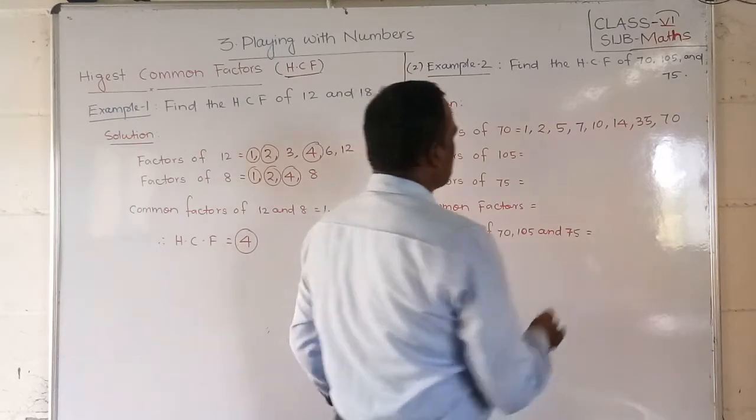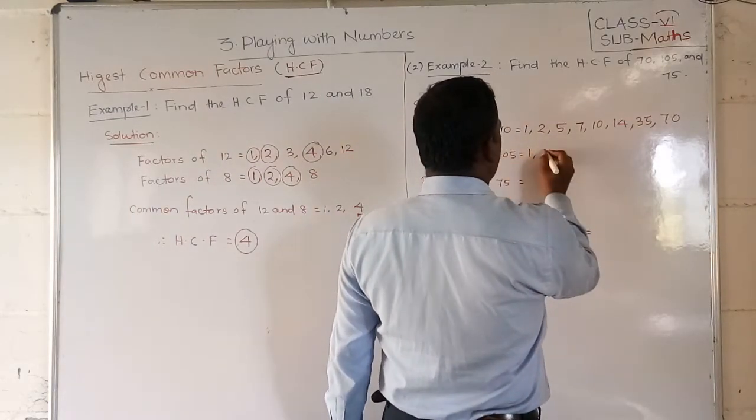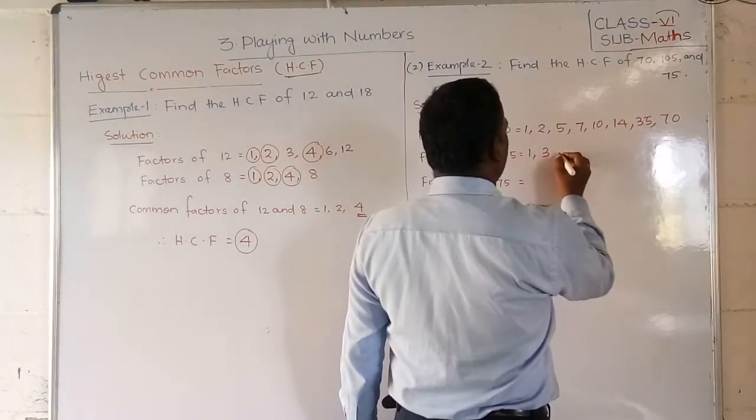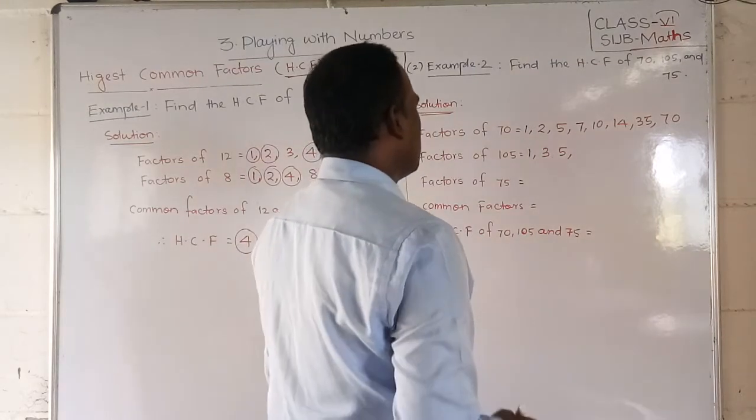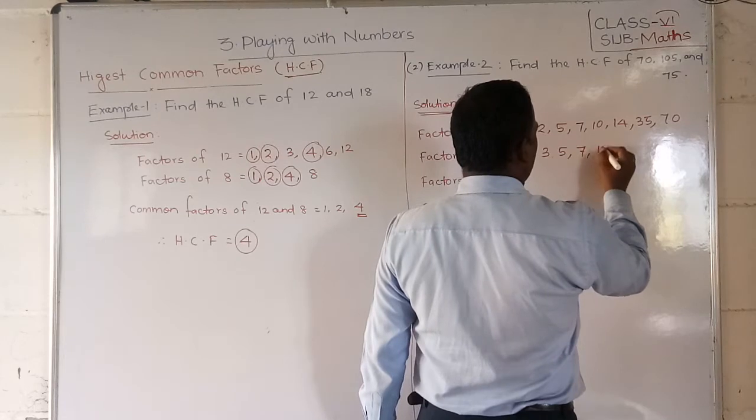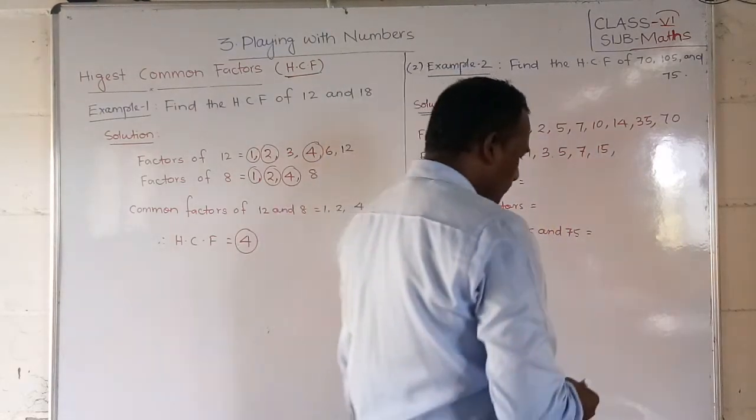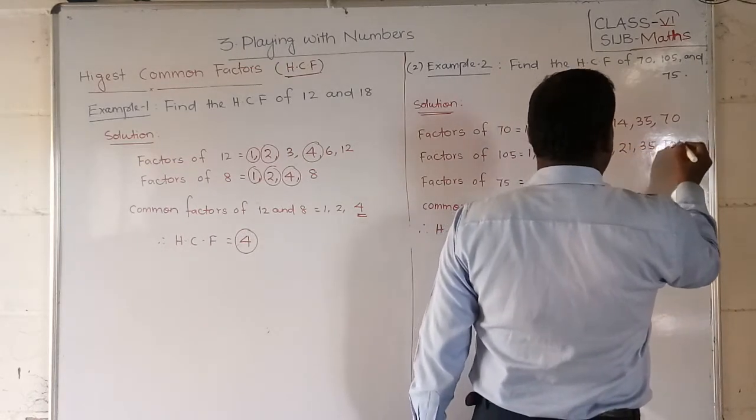Next, factors of 105. Write down: 1. 3 also, because 1 plus 0 plus 5 is divisible by 3. So 3. Next, 5 also. Next, it will be 7. 7 also. 15 also. 15 times 7 is 105. Next, 21 also. 35 and 105.